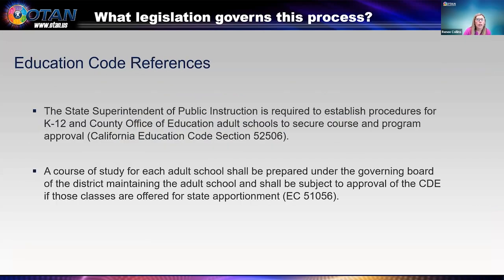The following education code governs the course approval process. The state superintendent of public instruction is required to establish procedures for K-12 and county office of education adult schools to secure course and program approval. This is part of education code section 52506, and this is why the course approvals site was developed by the OTAN team and CDE. Education code 51056 states that a course of study for each adult school shall be prepared under the governing board of the district maintaining the adult school and shall be subject to approval of the CDE if those classes are offered for state apportionment. The course approvals are specific to our K-12 and county office of education adult schools.